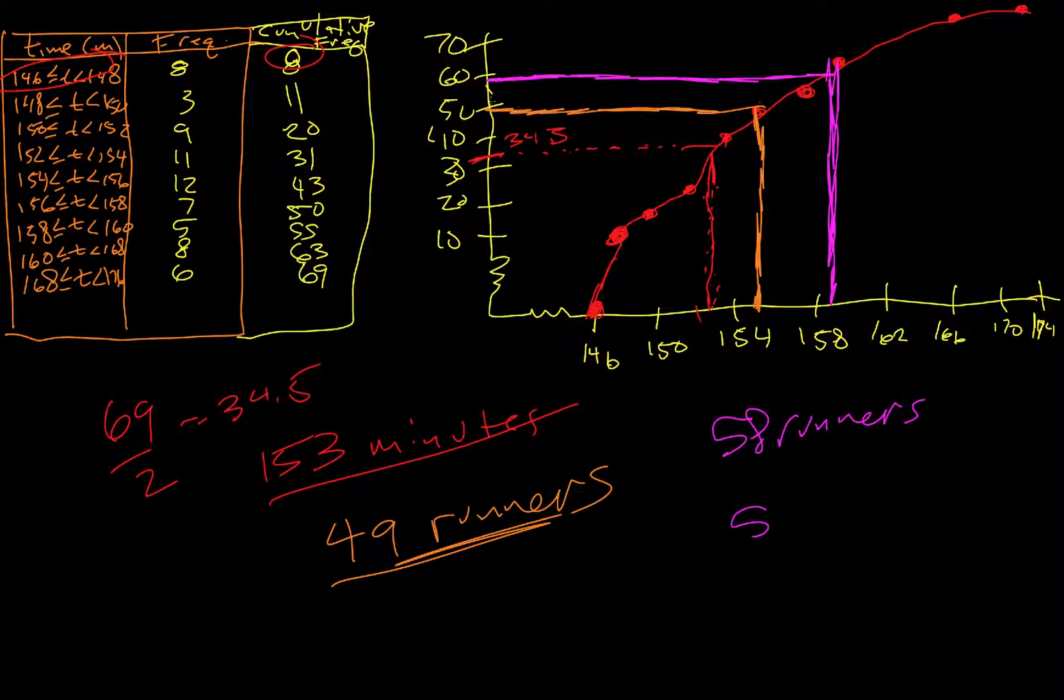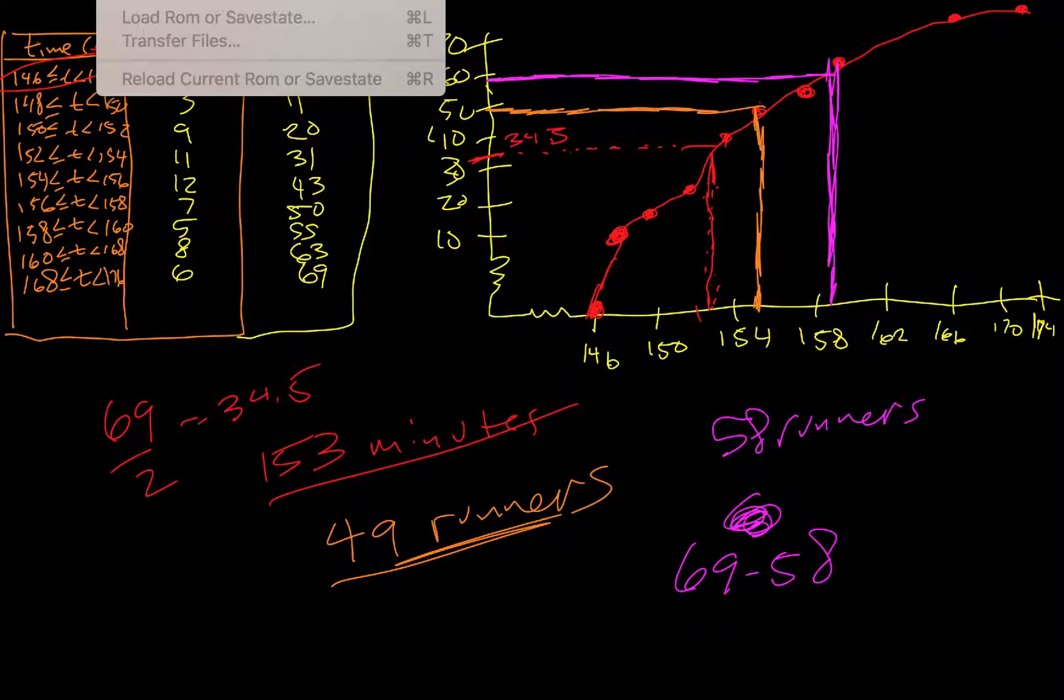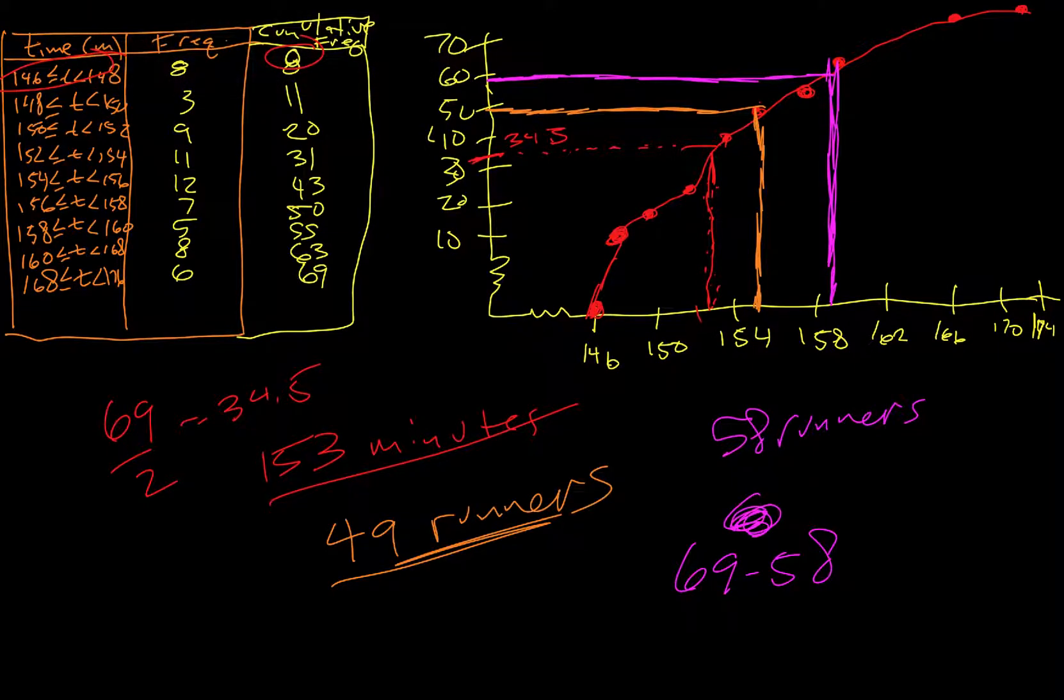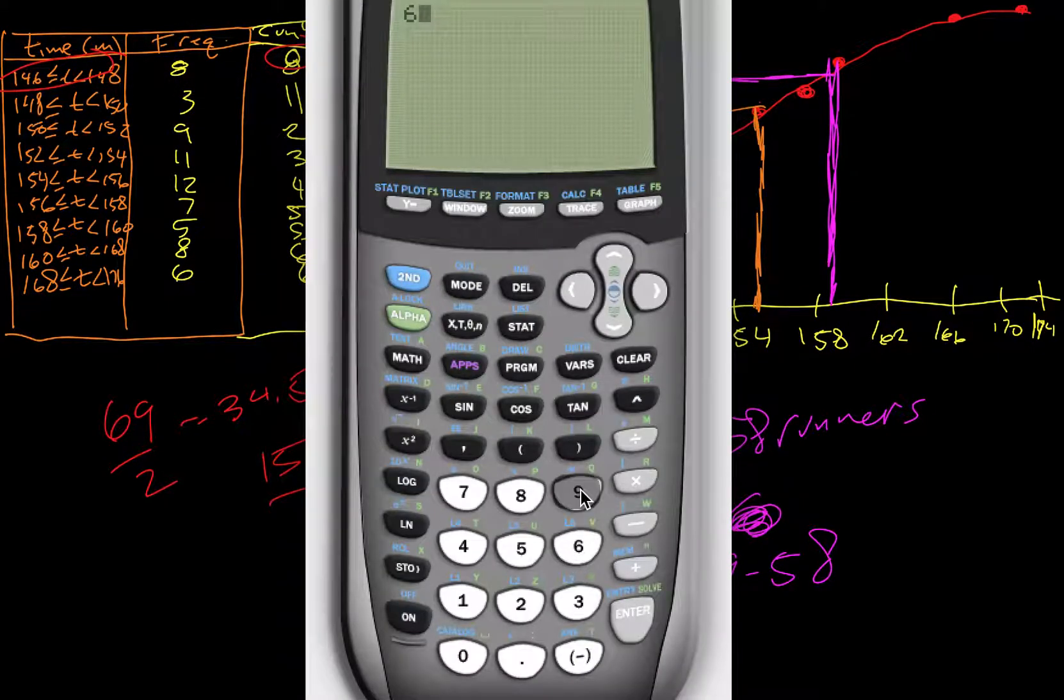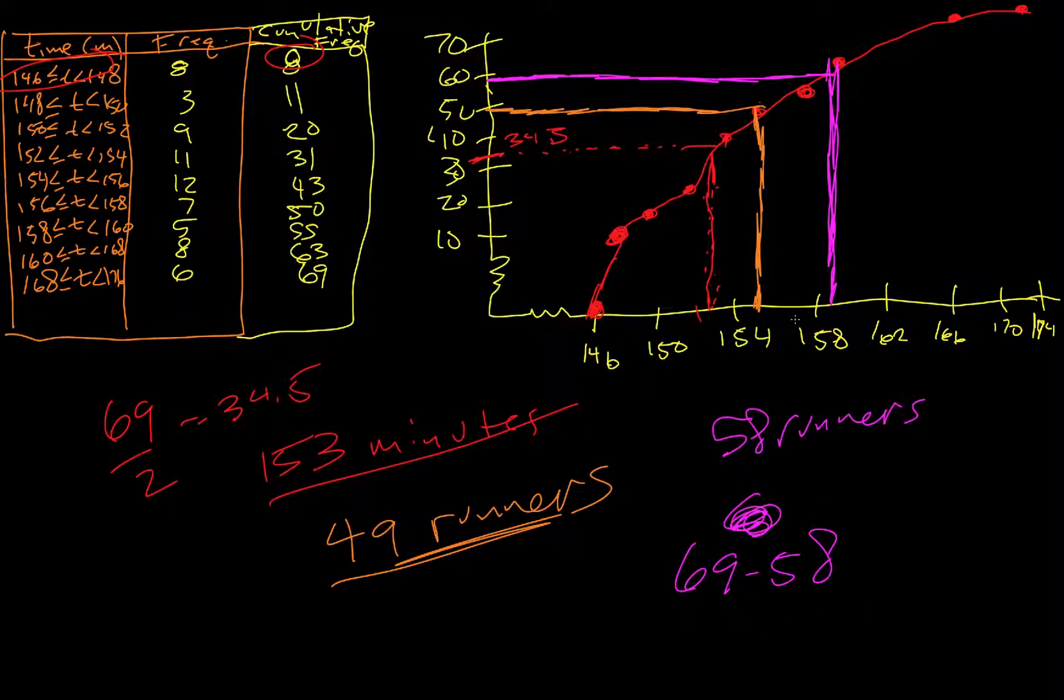Oh wait, sorry. 58 were slower. We want that took more than that. So we're going to have to say 69 minus 58 to figure that out. So 69 minus 58. So we get 11. Then we want to know the percentage of that. So we're going to say 11 over the total, which is 69.